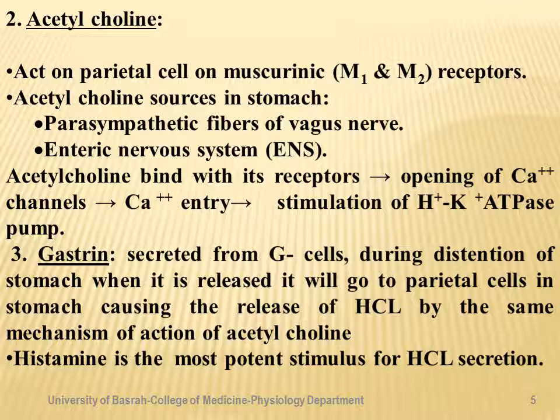Acetylcholine also acts on G cells to release gastrin, which then acts on specific receptors on the parietal cell through the same mechanism as acetylcholine, further increasing HCl secretion. However, histamine is the most potent stimulus for HCl secretion.